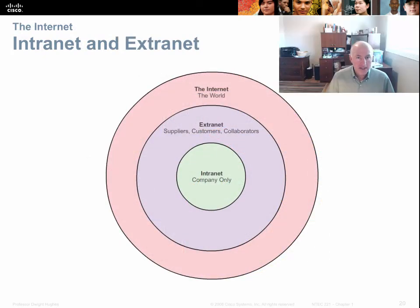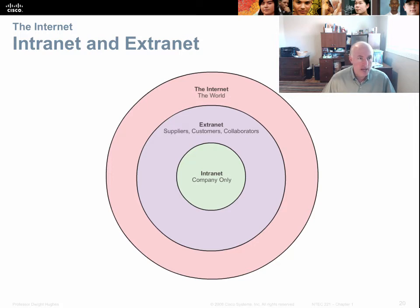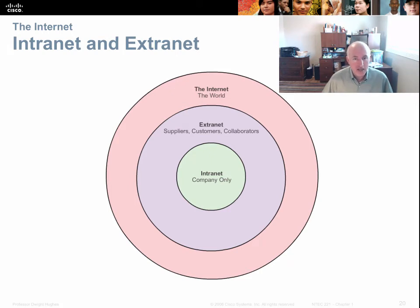The large internet is on the outside. Within the internet, you can create extranets — networks that a company creates to allow select outside groups like customers or suppliers to access their network. If you log into your bank online, that's an extranet. An intranet is only available to employees within that company, sometimes through special secure connections from employees' homes, and it's not available to customers or anyone else in the world.